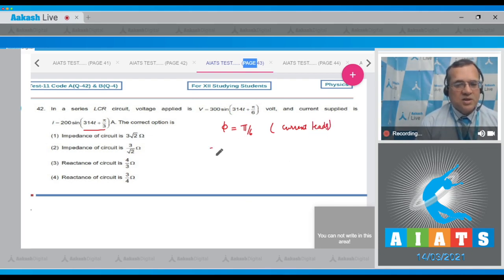The impedance Z equals the peak voltage divided by peak current. The voltage peak value is 300 divided by the current peak of 200, so Z = 3/2 ohms for the circuit. The first and second options are not true. Now let's calculate the reactance.